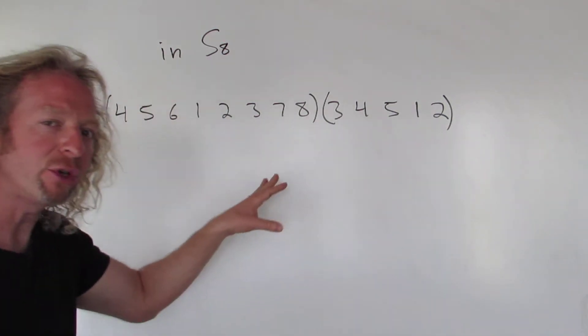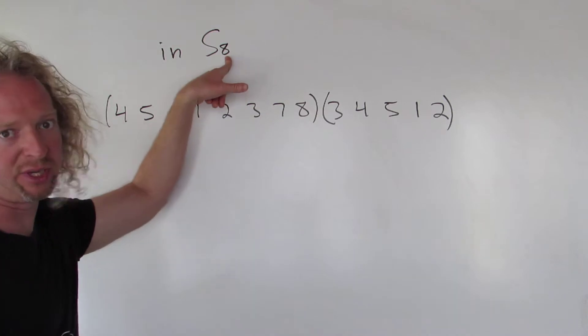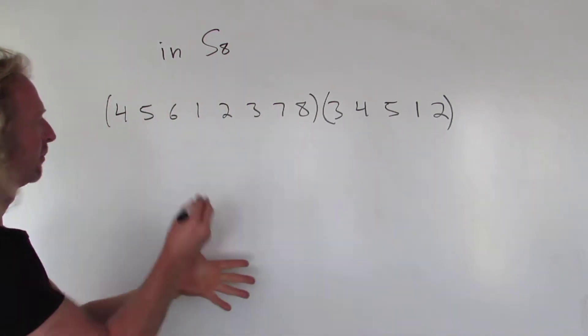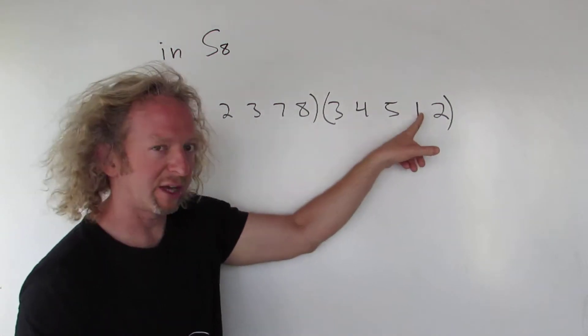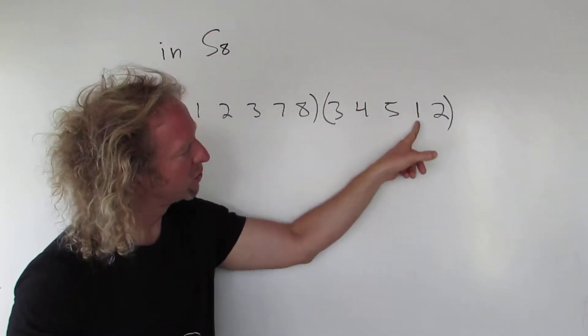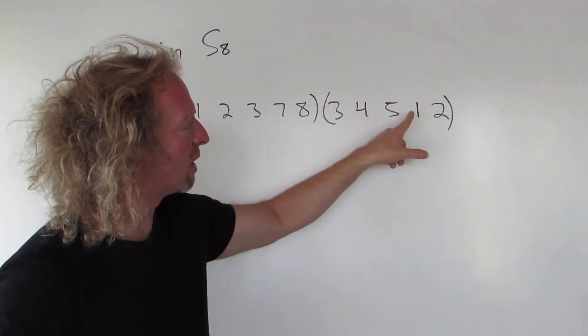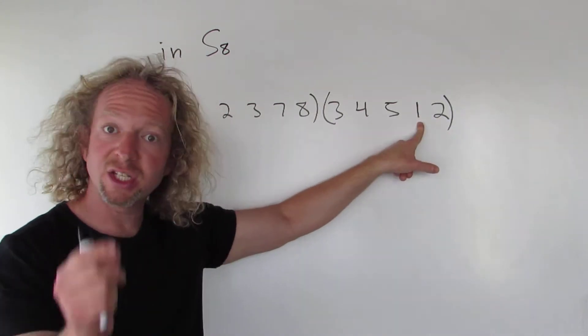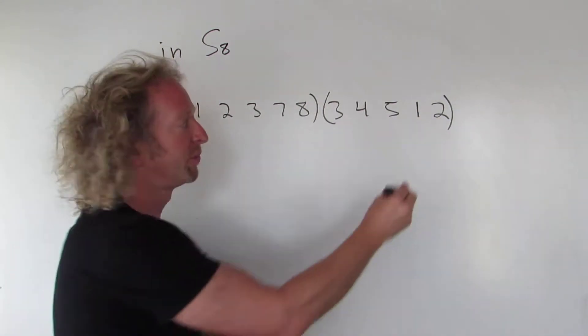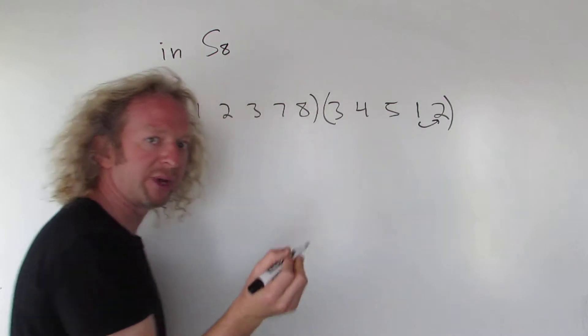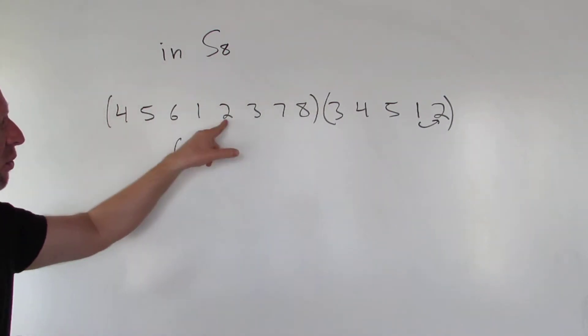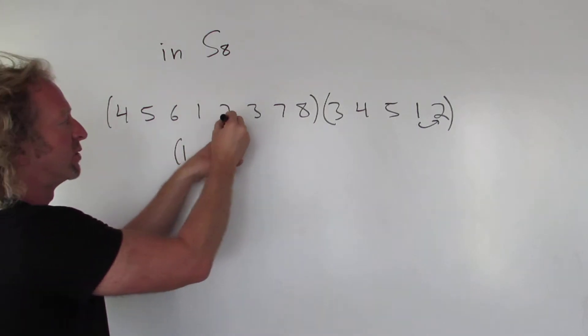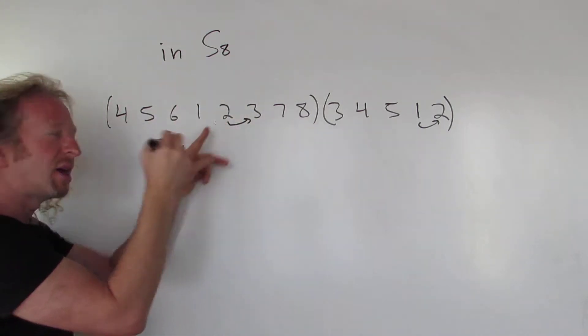Now you can pick any number you want between 1 and 8 because it's degree 8. Let's just start with the number 1. So then you start right to left. First you look here for the 1. So this means that 1 goes to 2. So this permutation takes 1 and sends it to 2. Then you look over here and you look for the 2. Well, here's the 2. So 2 goes to 3. So that means that 1 goes to 3.